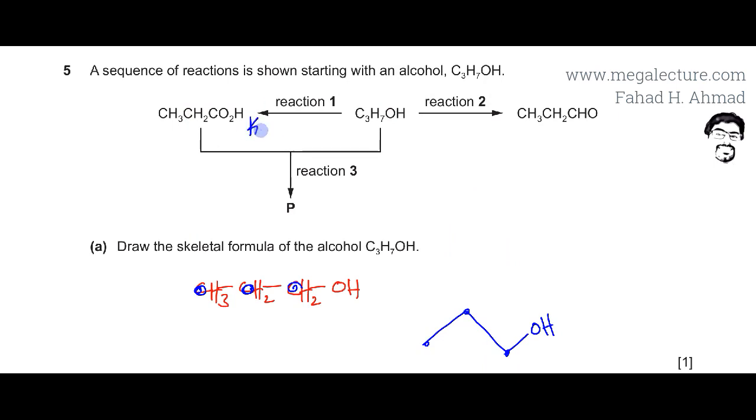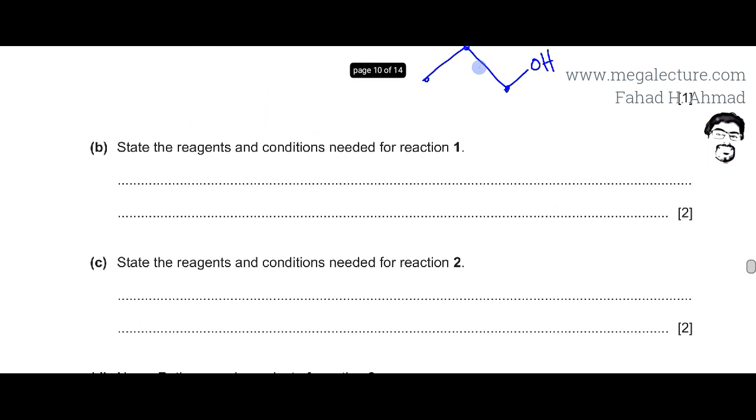So it's going to be K2Cr2O7. It's going to be acidified and the conditions that would be used is reflux. Reflux would help prevent anything from escaping the container because there's going to be a condenser on top. And in that way the alcohol would get completely oxidized to carboxylic acid. So let's write down the conditions: K2Cr2O7 acidified and reflux, or potassium dichromate(VI).